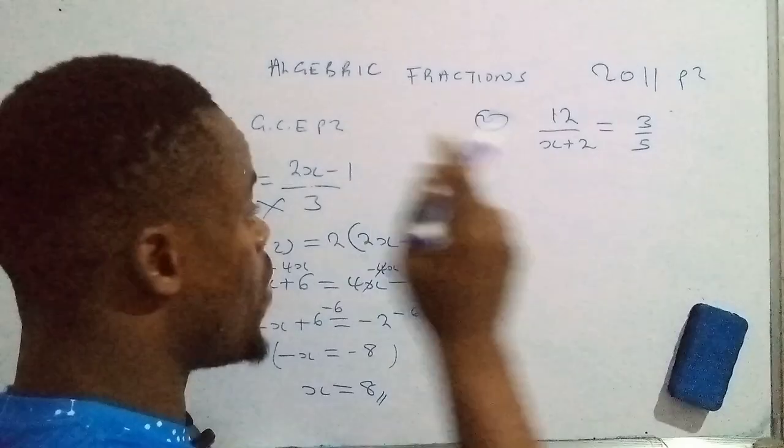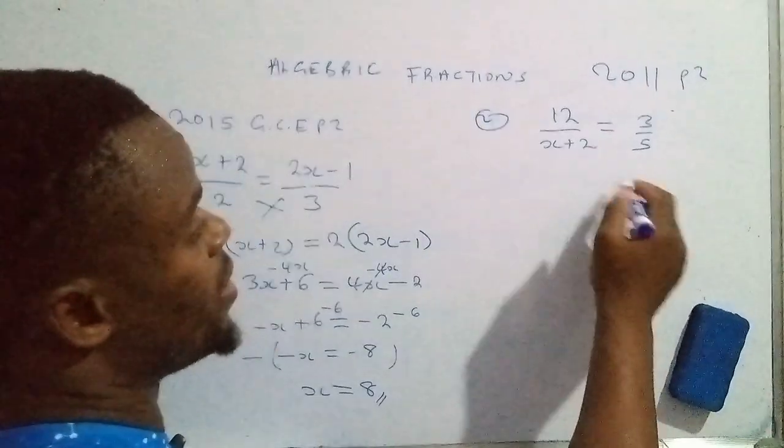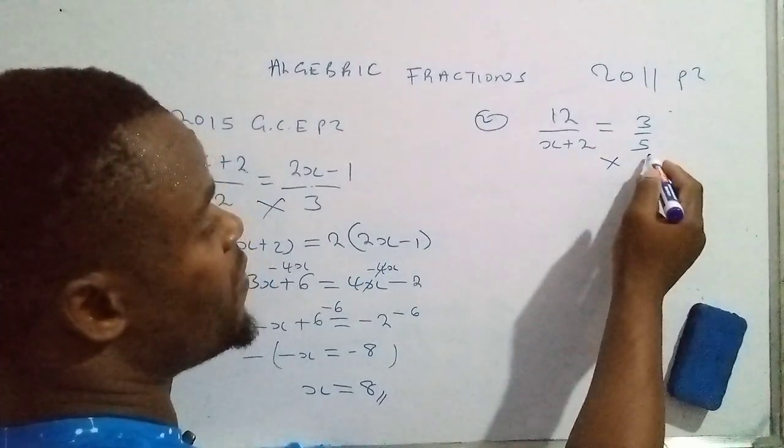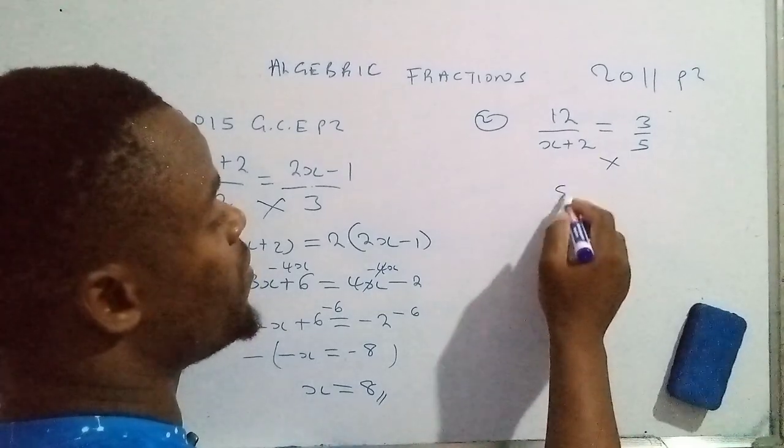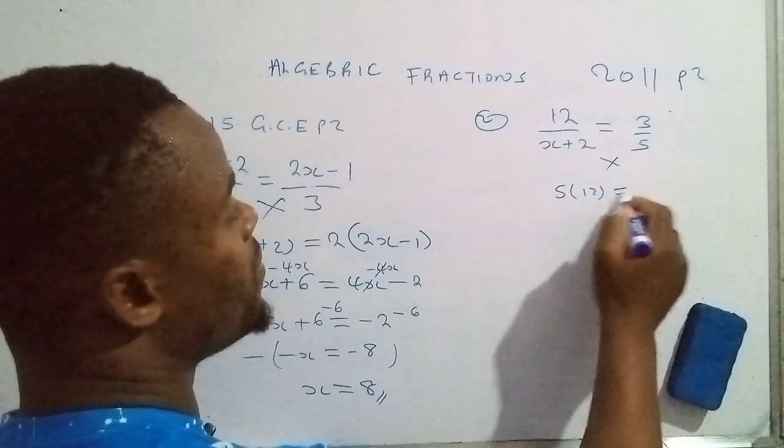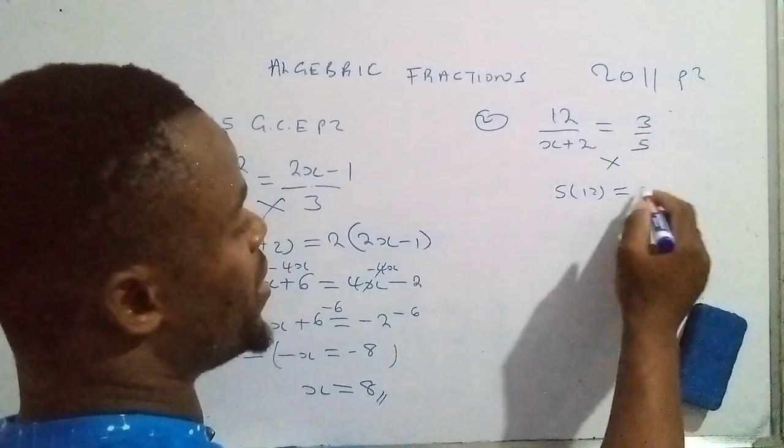This one as well has to be worked out the way we have solved the first one. You cross multiply: 5 will be multiplied by 12, and then this one will be multiplied by 3.